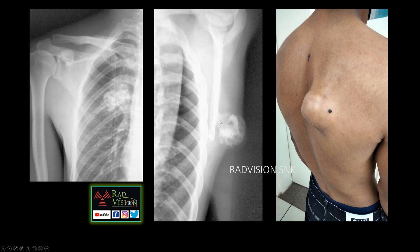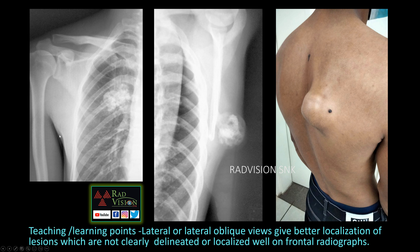This is a case of pedunculated osteochondroma with probable malignant or sarcomatous transformation based on the cartilaginous cap thickness. Always take lateral or lateral oblique views whenever you are unable to delineate mass lesions on frontal radiographs.